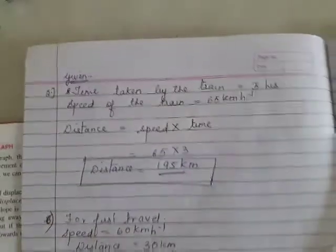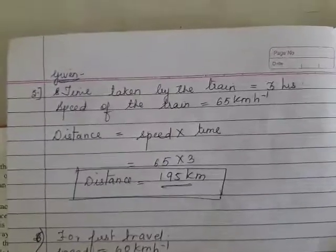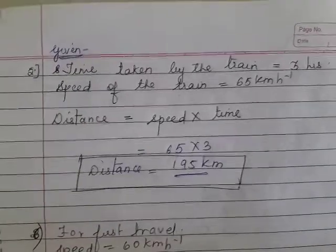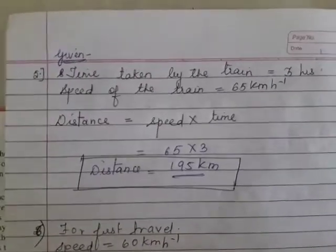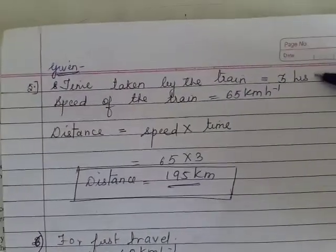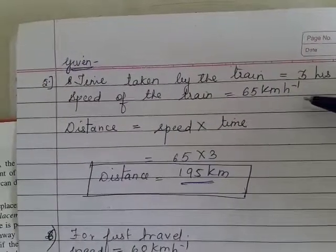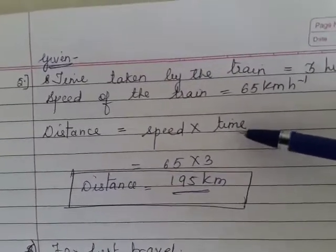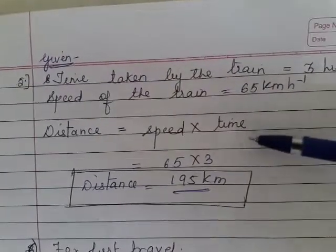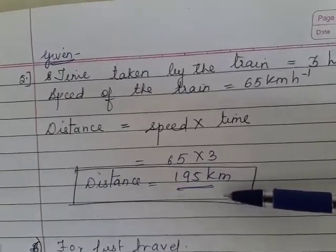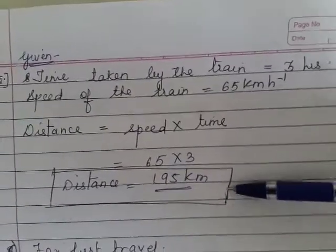Now let us go to the fifth numerical. A train takes 3 hours to travel from Agra to Delhi with a uniform speed of 65 km/h. Find the distance between the two cities. Time taken is 3 hours, speed is 65 km/h. The formula for speed is distance upon time, so distance = speed × time = 65 × 3 = 195 kilometers.